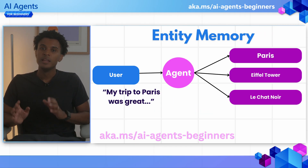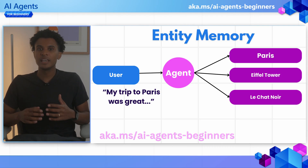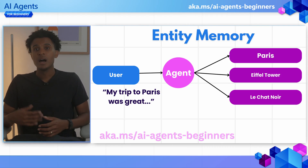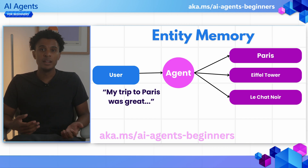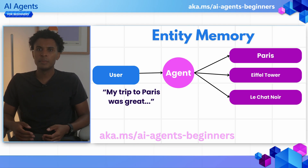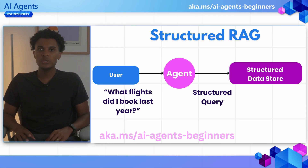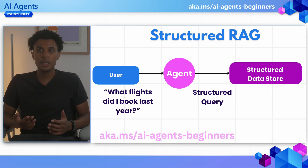The next memory type is entity memory. This is memory that gets extracted from conversations as entities. For example, when a user is talking about how much they enjoyed their trip to Paris, the agent can extract entities like Paris as a city, Eiffel Tower as a tourist attraction, and Le Chat Noir as a restaurant. This could be important information for future bookings, especially when looking for similar items.